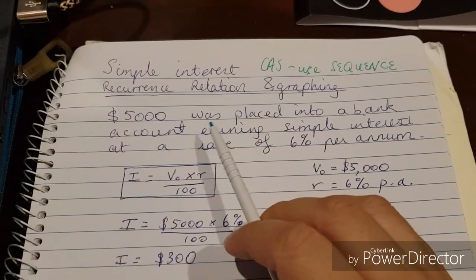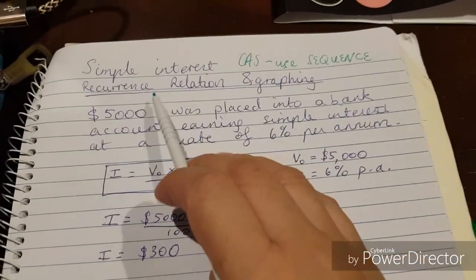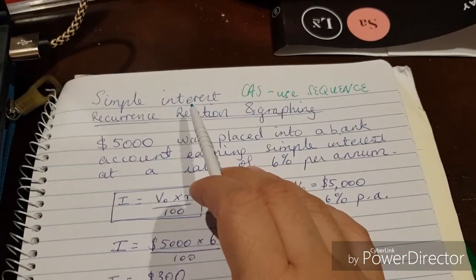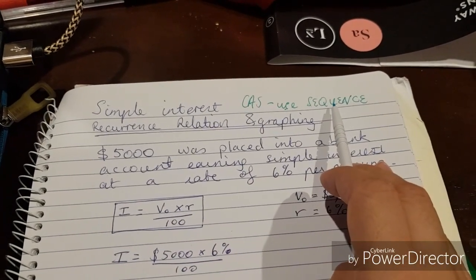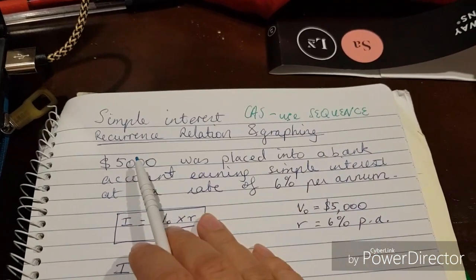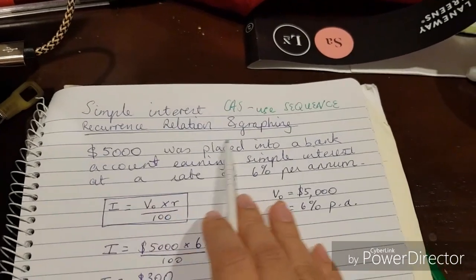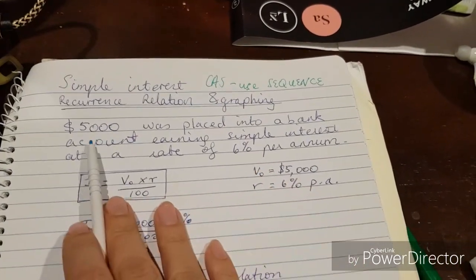We're going to use the Casio class pad today to do a simple interest recurrence relation problem using the sequence function. It's a first order relation and graphing problem. Let's get started.